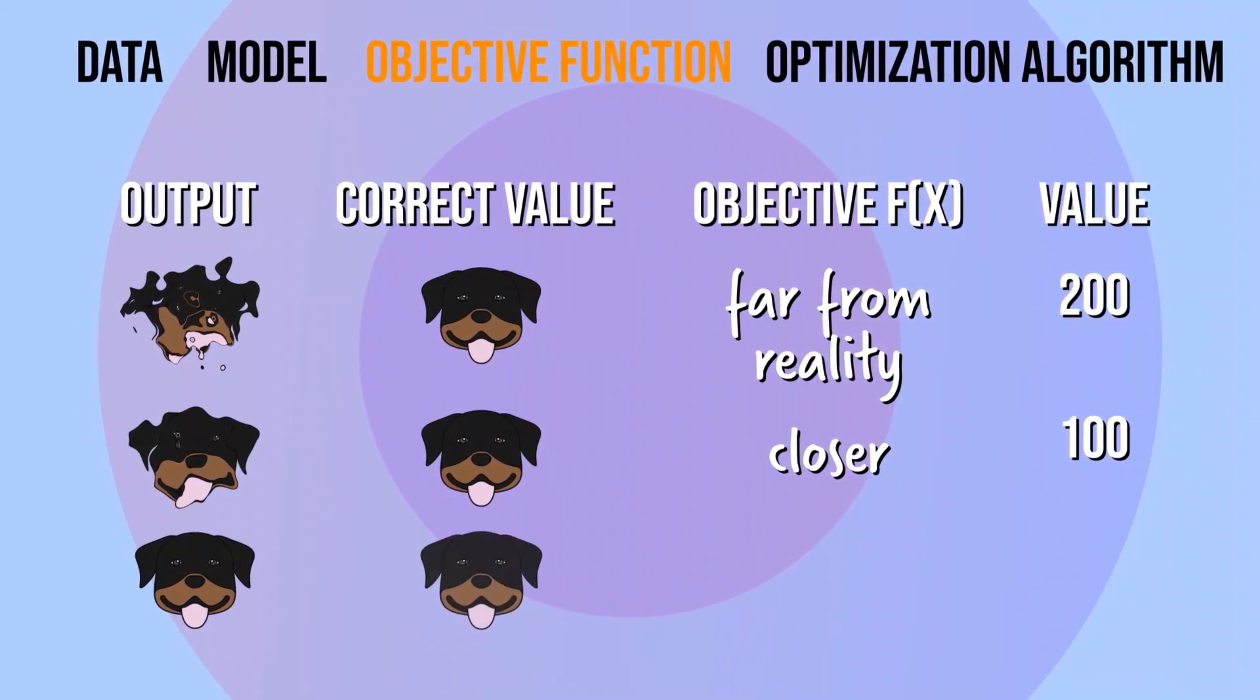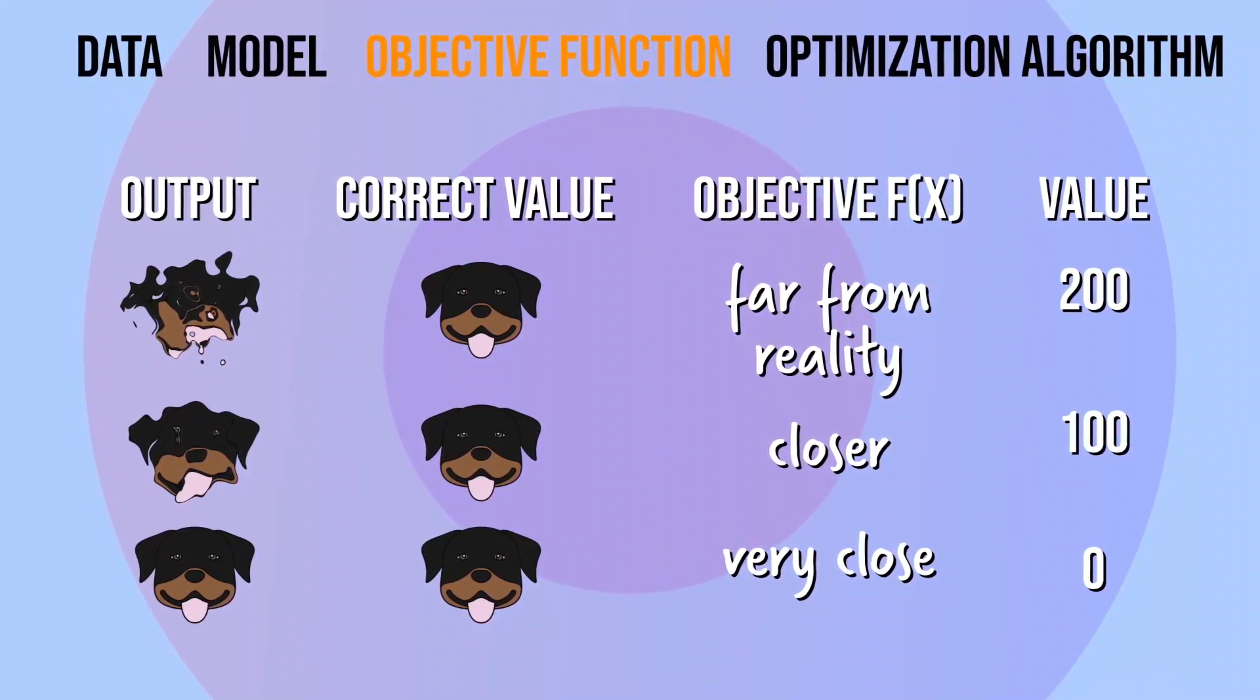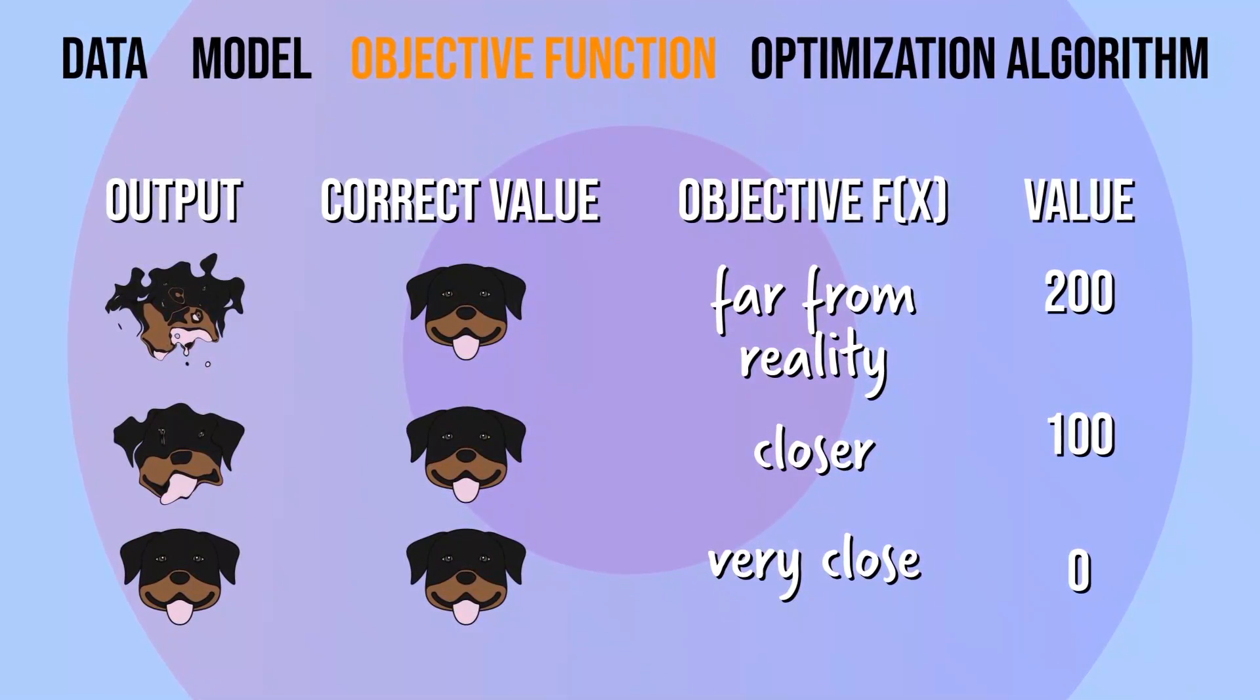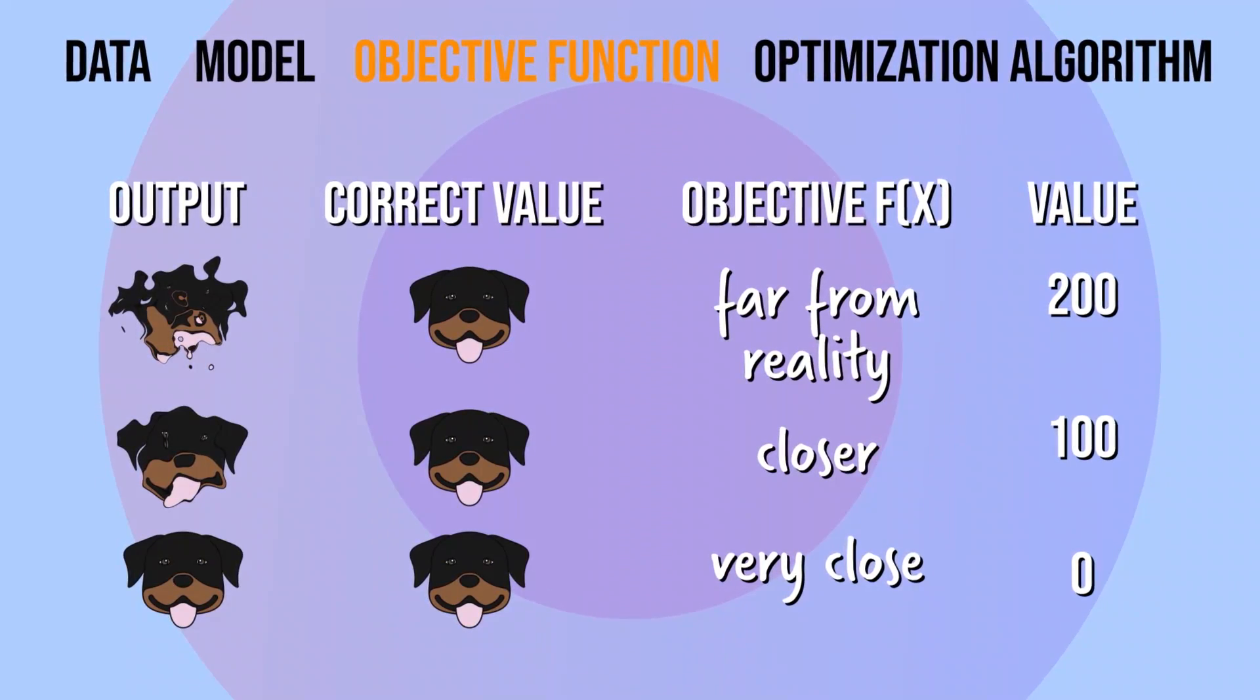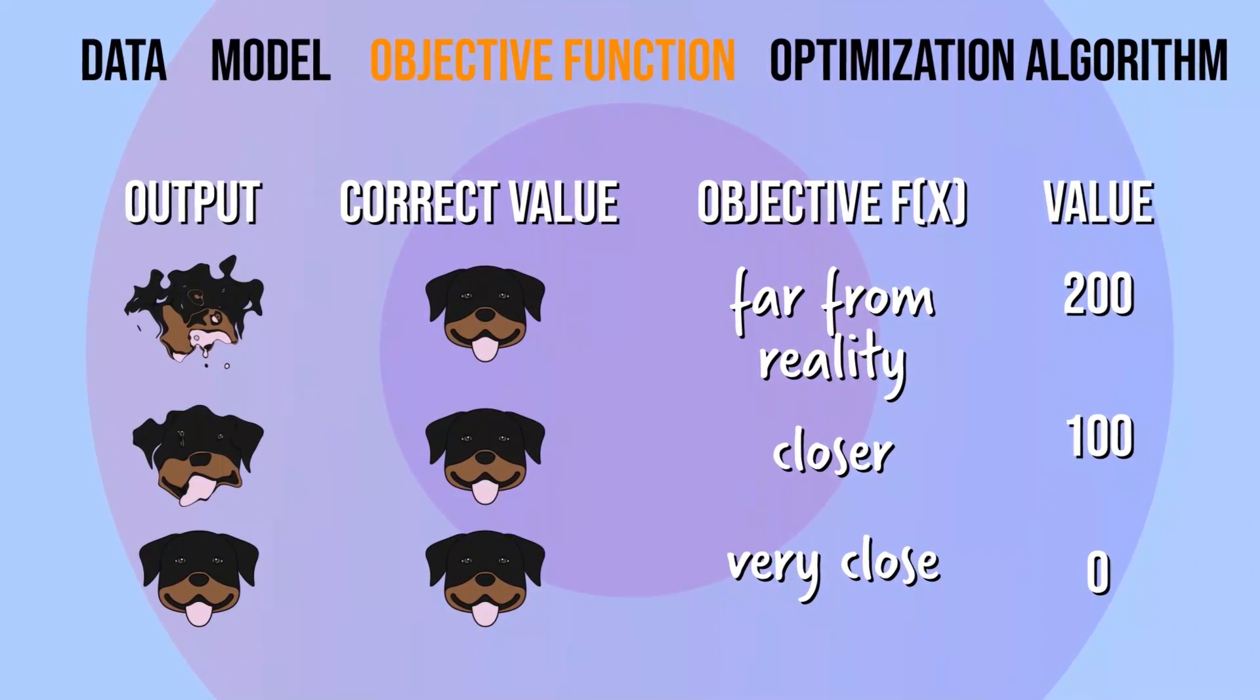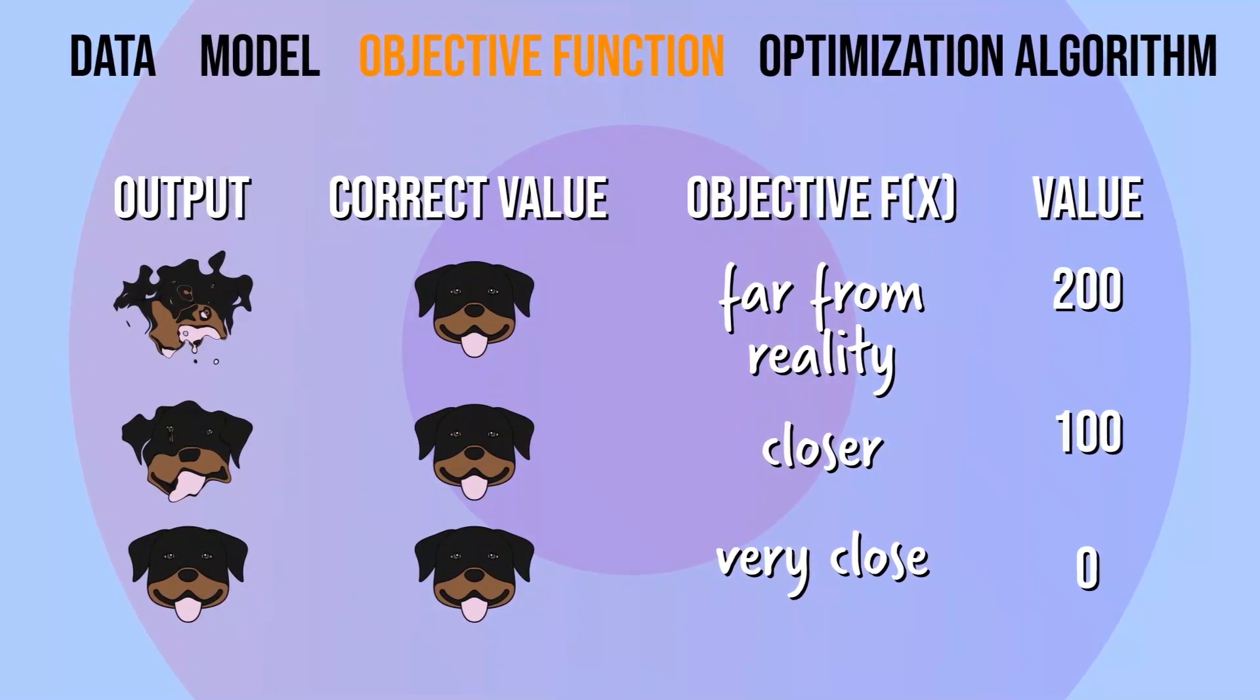We're trying to minimize it. Unfortunately, there is no universal loss function that works for all kinds of data. It depends on a lot of factors like the presence of outliers, the choice of machine learning algorithm, the time efficiency of gradient descent, and the confidence of predictions.